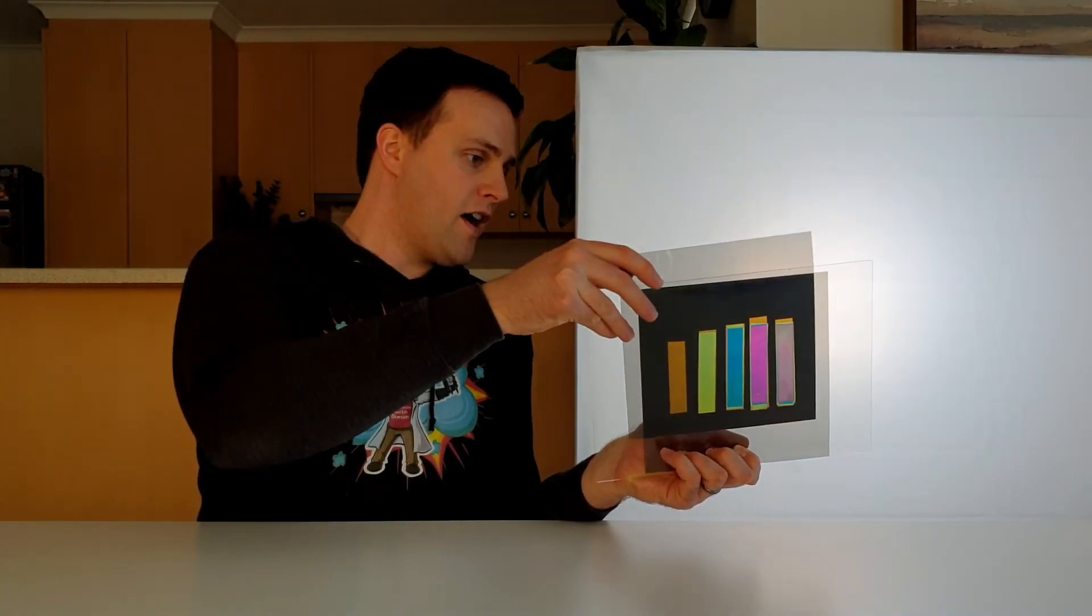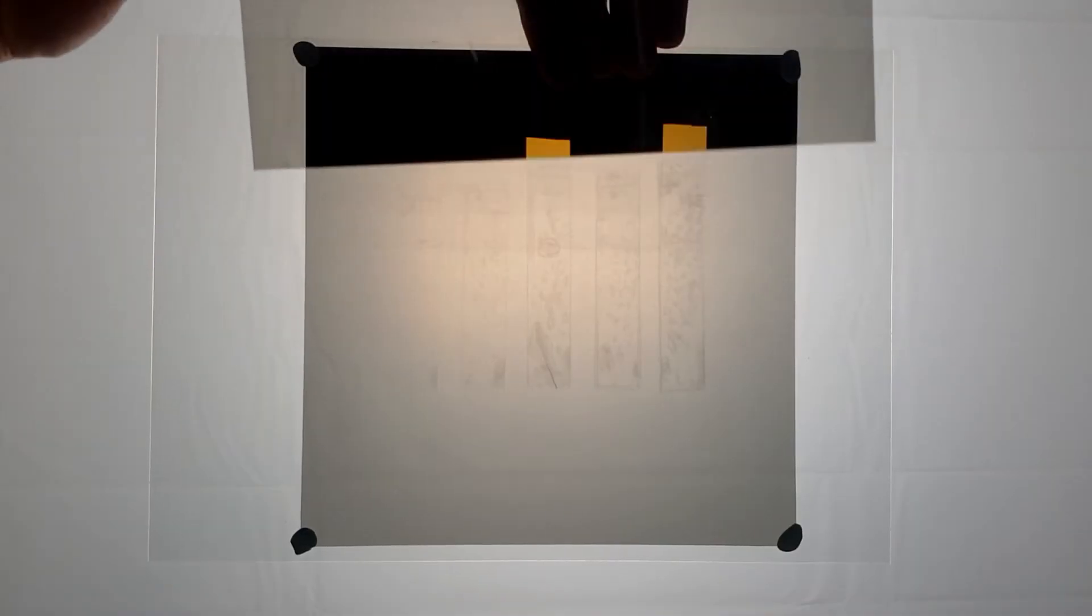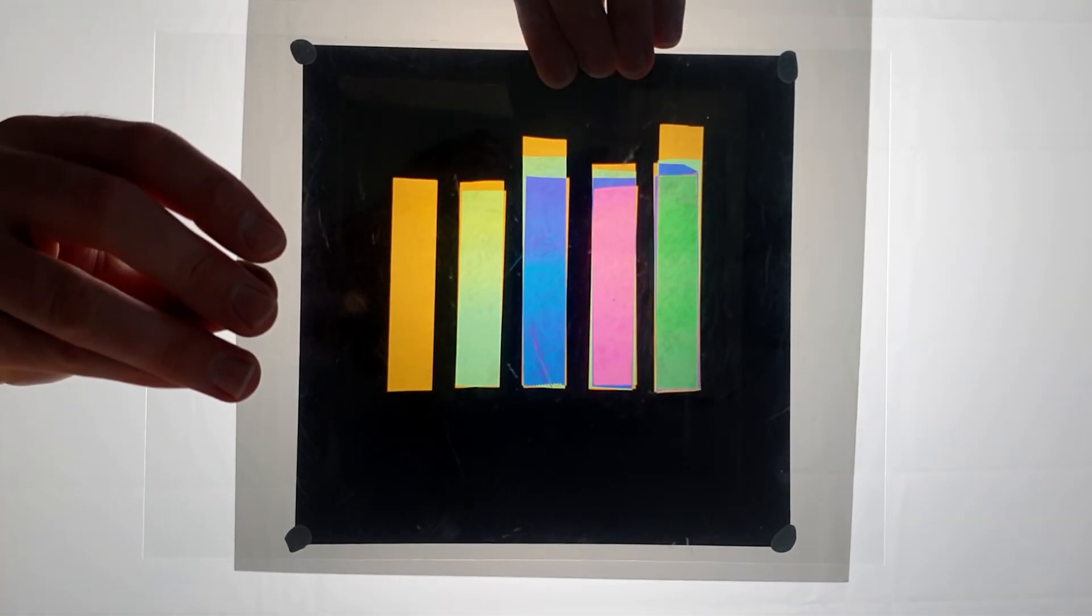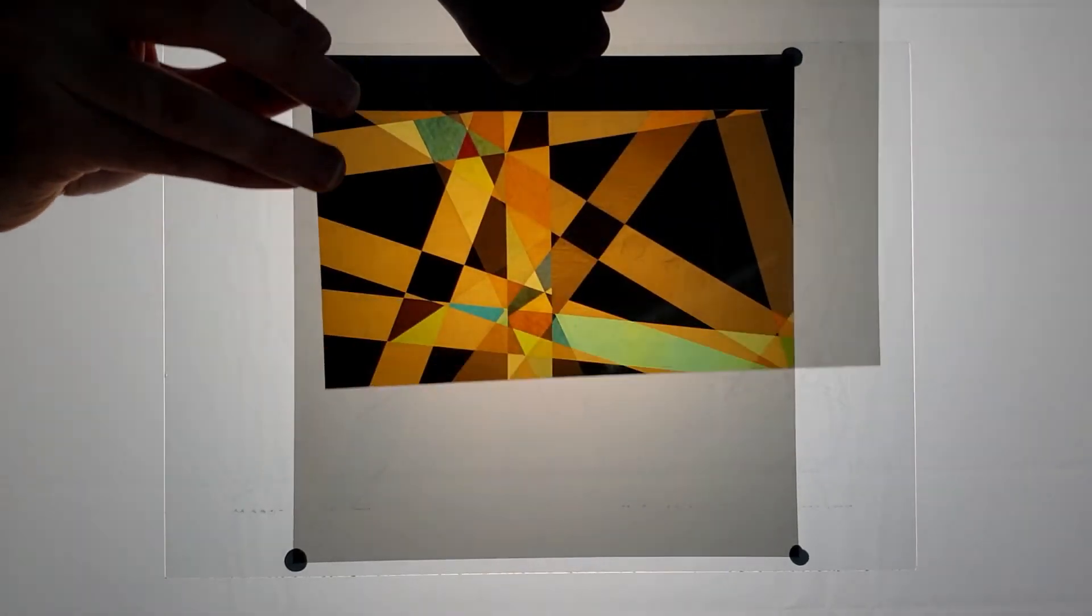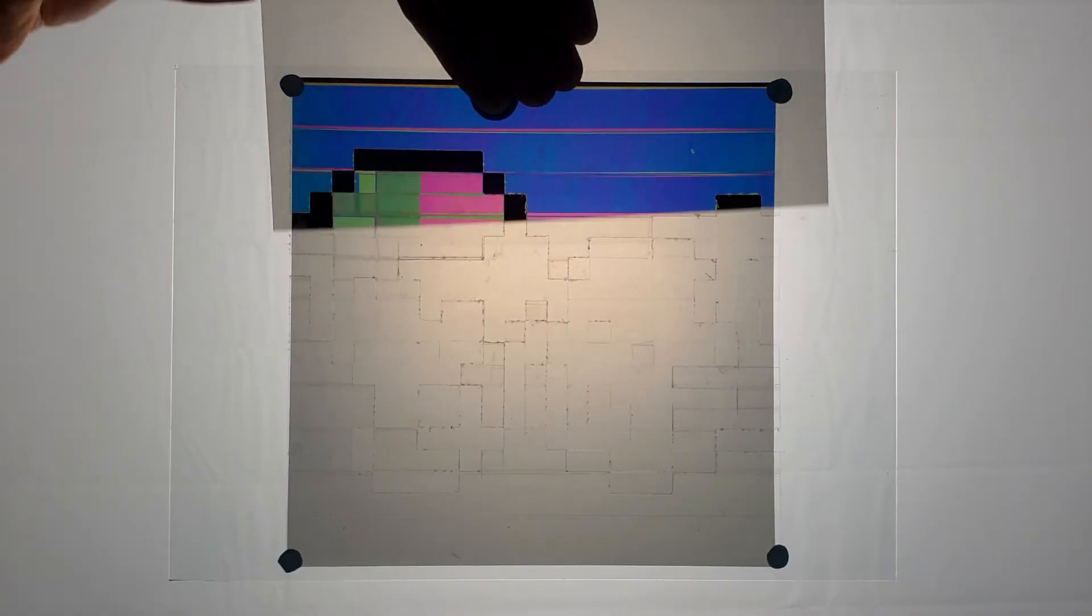So for each number of layers, there will be a particular color that gets rotated in the right way to pass through the second polarizer more than other colors. That's why we see different colors appearing in our art.